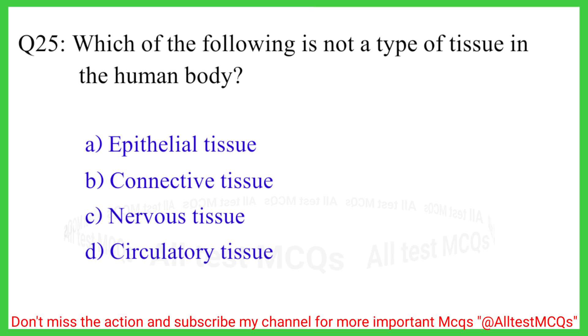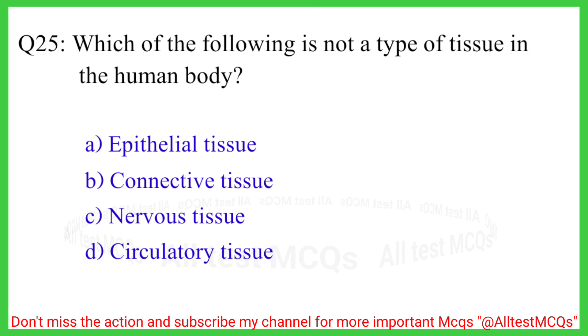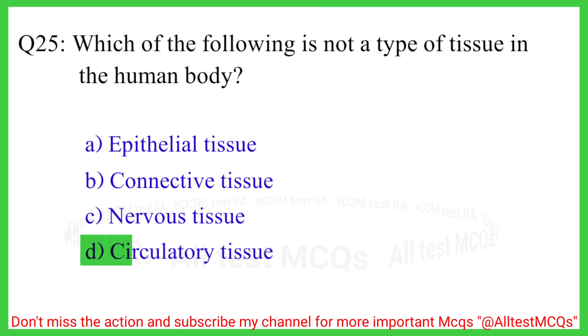Question number 25. Which of the following is not a type of tissue in the human body? The correct answer is option D, circulatory tissue.